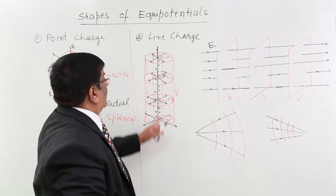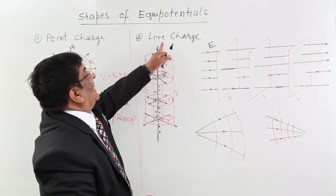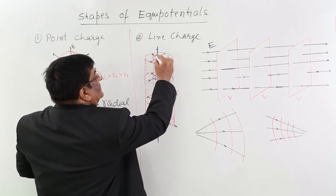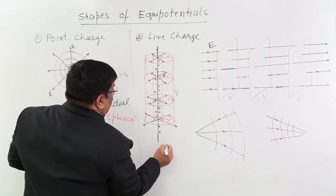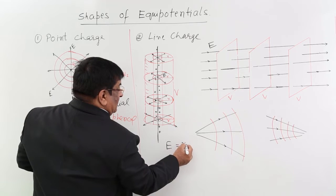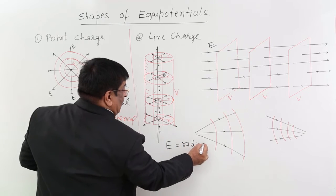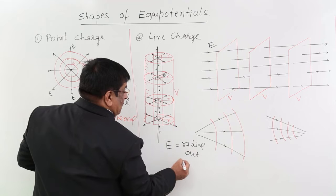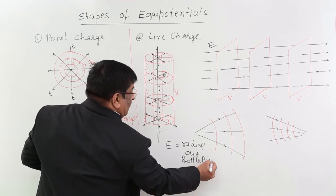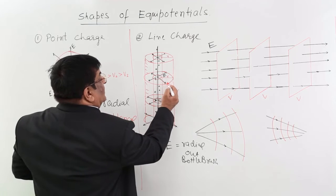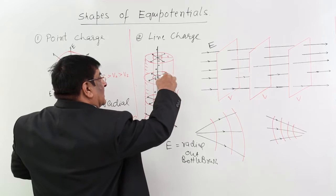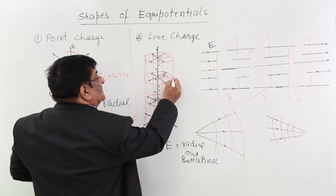Now, if our charge is given on an infinite line — a line charge — then how is the electric field? The electric field acts like a bottle brush: it radiates outward radially. Now, where are the equipotential surfaces? Draw a normal to this. At equal radius R, there is one circle where every point has the same potential.